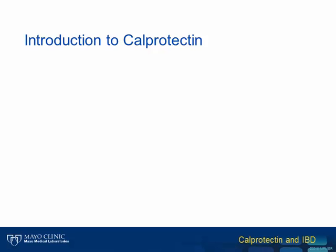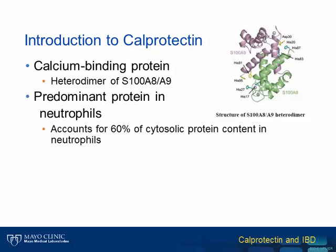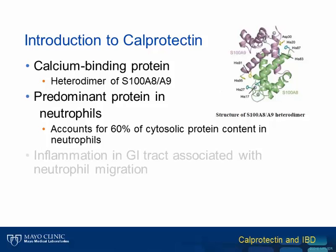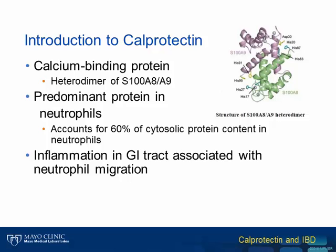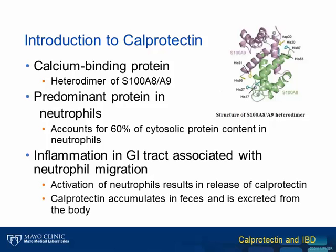Calprotectin is a heterodimer of a calcium-binding protein S100A8 and A9. It is one of the most abundant proteins in neutrophils, accounting for almost 60% of the cytosolic protein content. An inflammatory response in the gastrointestinal system is associated with neutrophil migration. At the site of inflammation, neutrophils are activated, which leads to release of calprotectin. The calprotectin then accumulates in the fecal material and is excreted from the body.